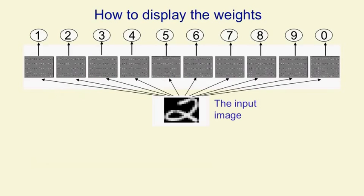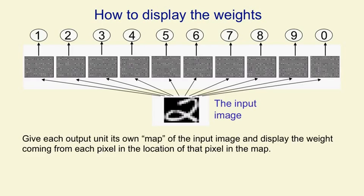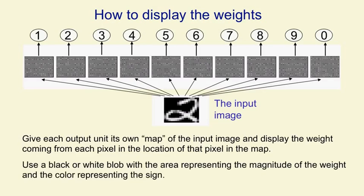First we need to decide how to display the weights. It seems natural to write the weights on the connection between an input unit and an output unit, but we'd never be able to see what was going on if we did that. We need a display in which we can see the values of thousands of weights. So the idea is for each output unit, we make a little map, and in that map we show the strength of the connection coming from each input pixel in the location of that input pixel. We show the strength of the connections by using black and white blobs, whose area represents the magnitude and whose colour represents the sign. The initial weights you see there are just small random weights.